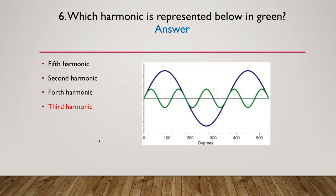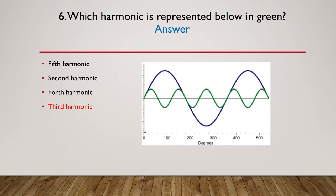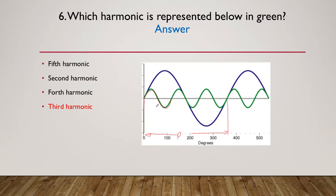It's the third harmonic. One complete period of the fundamental is from start to start — all the way across. We count how many full green waves fit inside that fundamental: there's one, a second one, and finally a third one. There are three complete green waves inside the period of the blue wave, hence the green wave is the third harmonic.